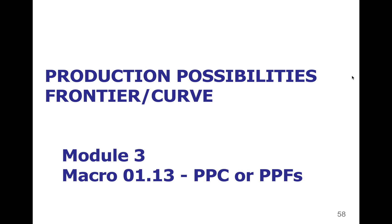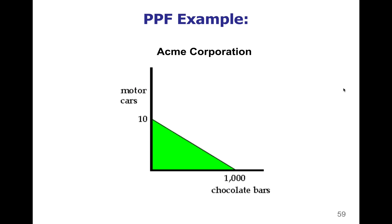This is your economics video on production possibility curves. The production possibility curve, or production possibility frontier, is a very basic graph and it's the first major graph that you're going to have to be able to draw and interpret.